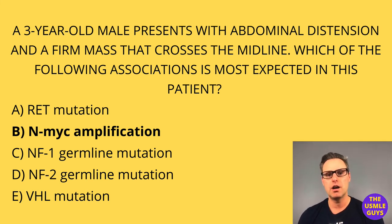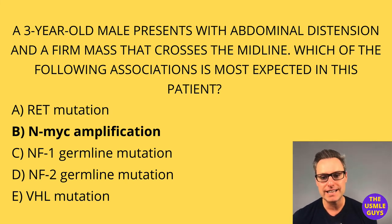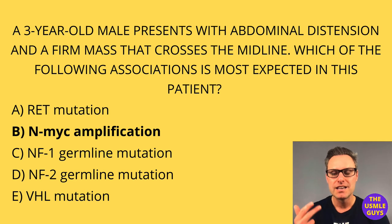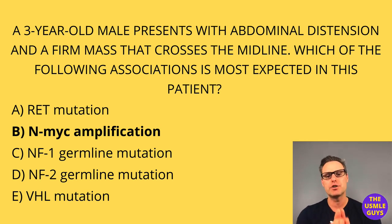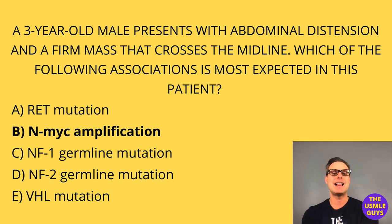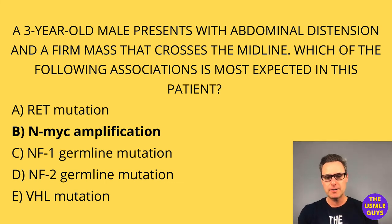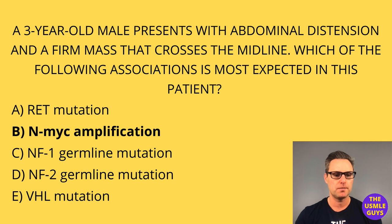Lab findings will show increased levels of homovanillic and vanillylmandelic acid in the urine and plasma. Additional lab findings demonstrate positive NSE, synaptophysin, and chromogranin. We manage pheochromocytoma with tumor resection, but very importantly: prior to surgery, we first give an irreversible alpha blocker such as phenoxybenzamine, followed then by a beta blocker prior to removal of the tumor — this is almost always a test question.